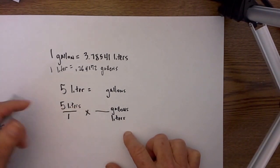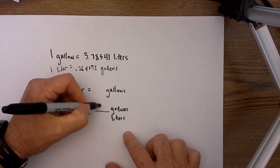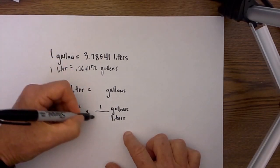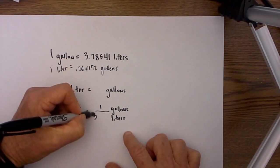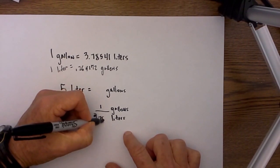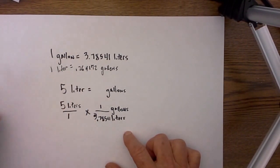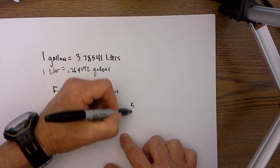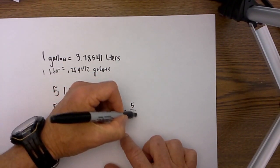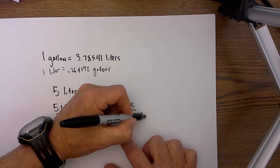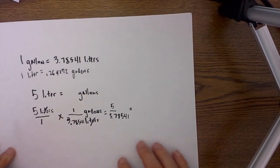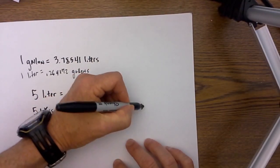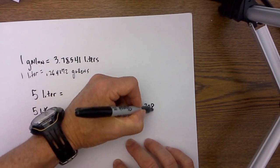Next I ask myself which is larger, gallons or liters. Gallons is larger, so I will put a 1 there, and I know my conversion: 1 gallon is 3.78541 liters. The liters will cancel and I just multiply straight across. So I get 5 divided by 3.78541, and if you do the math, that is equal to 1.32086 gallons.